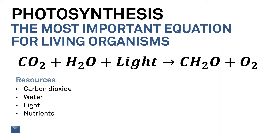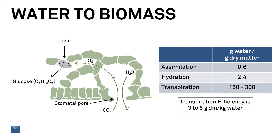The capture of nutrients is implied since the plant biomass needs to have those in order to exist. The photosynthesis equation shows water as a resource, and some actually is used in that process, but it's pretty negligible compared to the main use of water. Assimilation uses about 0.6 grams of water per gram of dry matter fixed. The plant is mostly made up of water — roughly 2.4 grams of water per gram of dry matter. By far the most important water use, though, is shown in the diagram on the left.